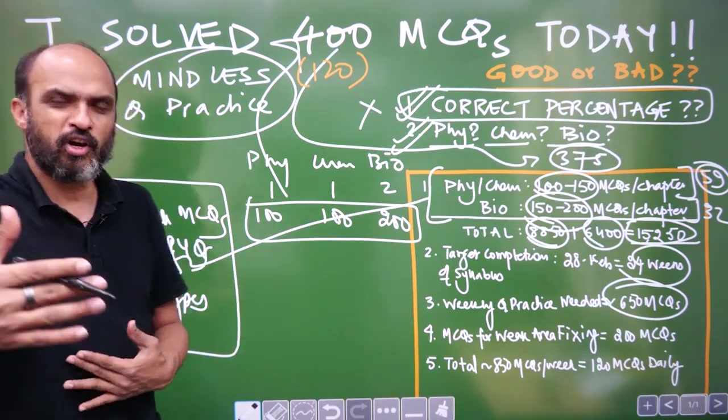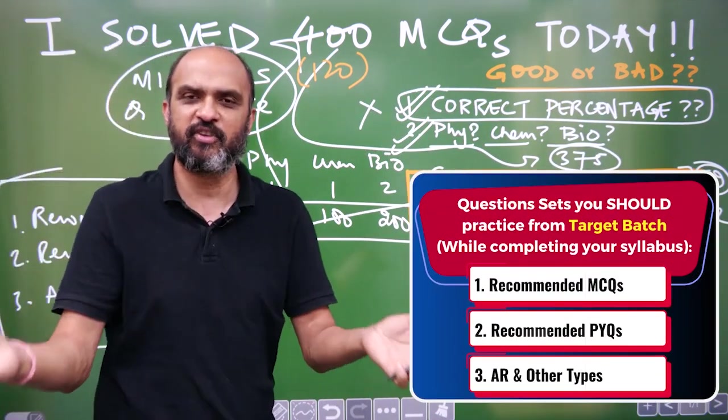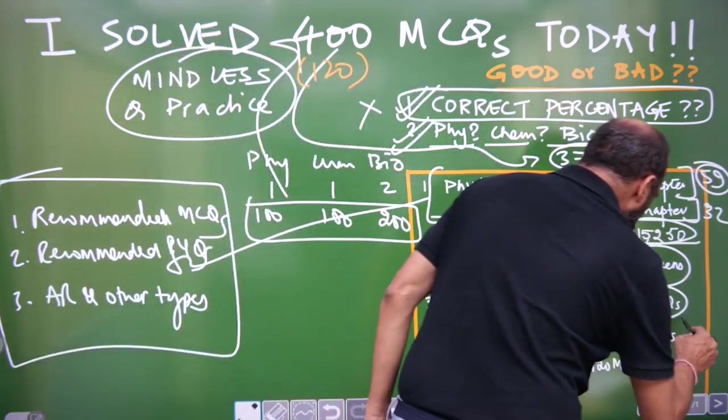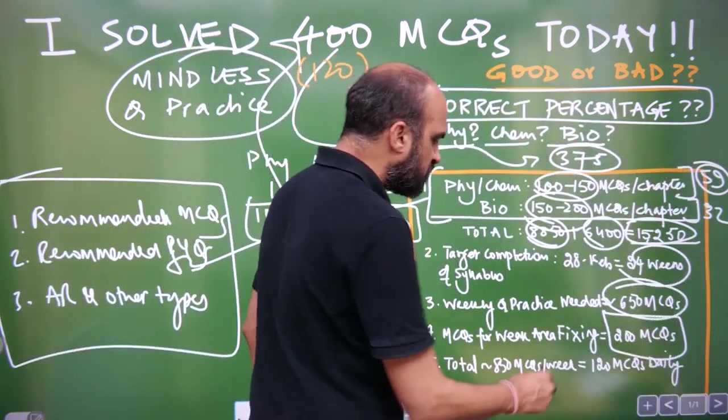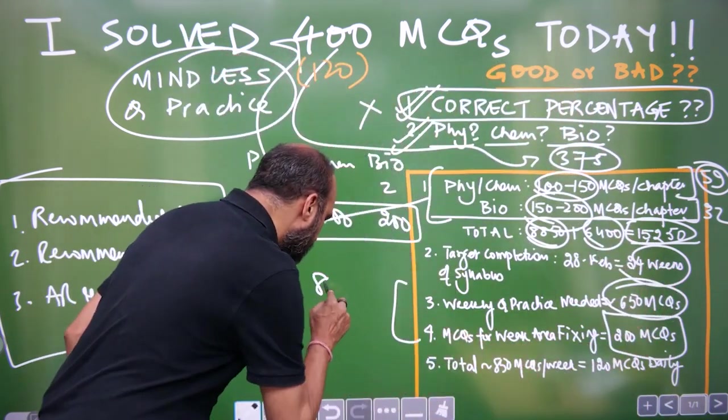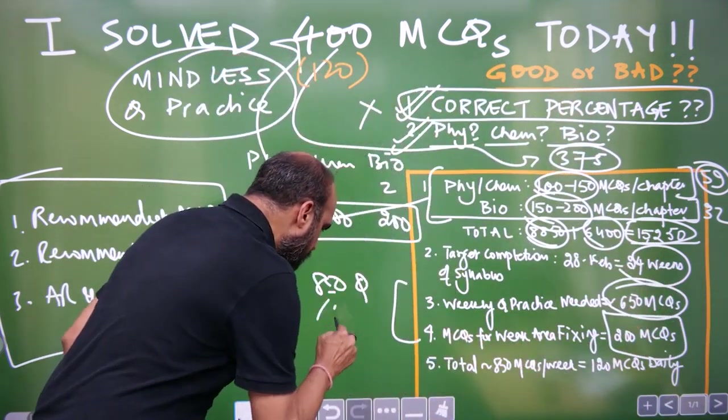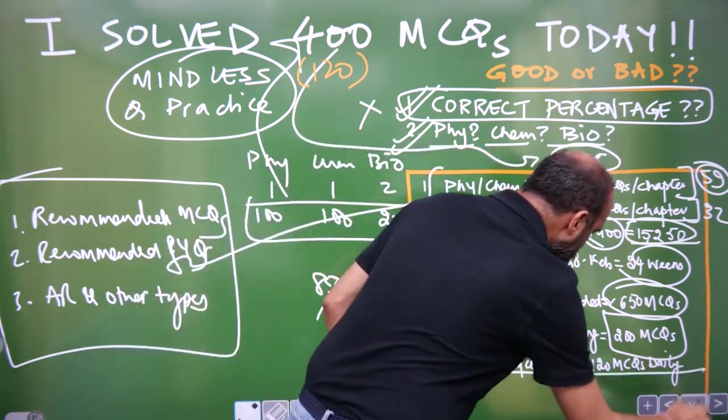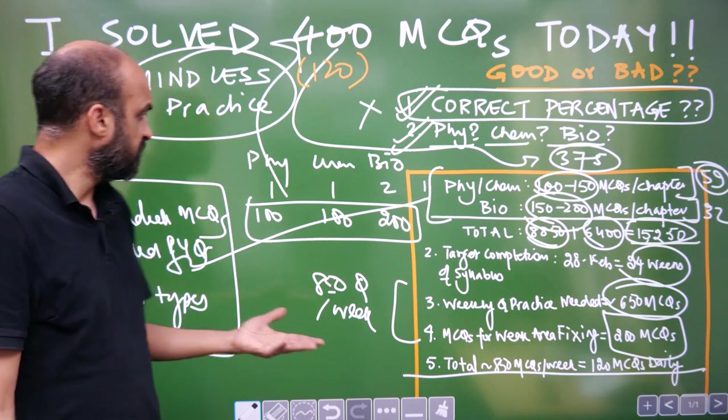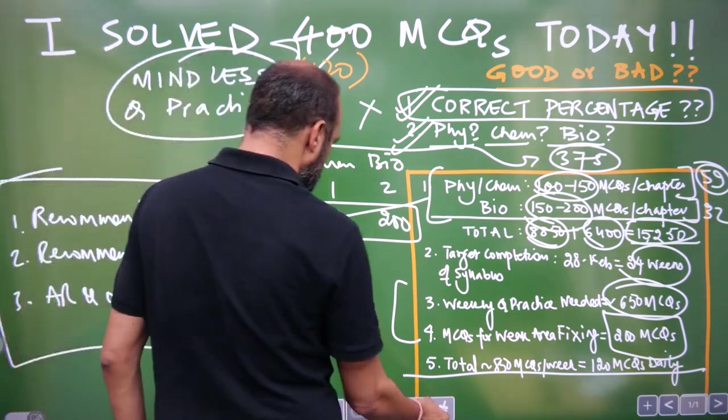Additionally, as you go along, you will start figuring out these are my weak areas. You need to practice more questions out of your weak areas. Assume 200 questions on weak areas every week. So, that makes it around 850 questions per week. And this means around 120 questions daily.